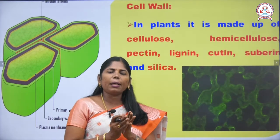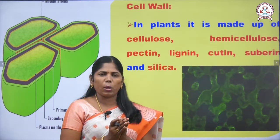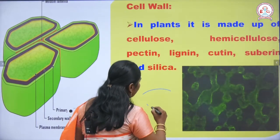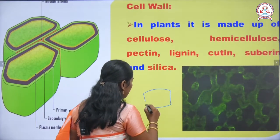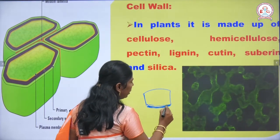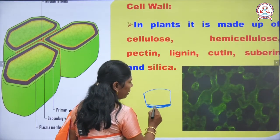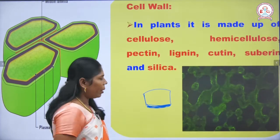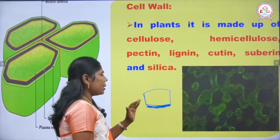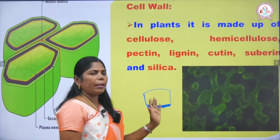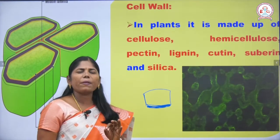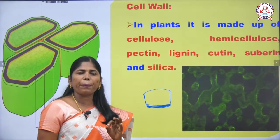In the endodermis region, we can see thickening in the radial and tangential walls. The endodermis cells show this thickening on the radial and tangential walls, and that thickening is made up of suberin.